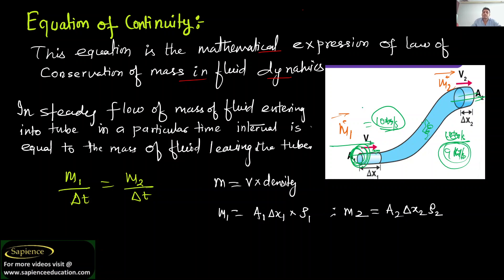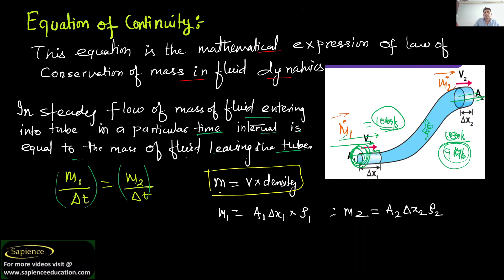As per this equation, whatever mass flow rate is going in at the inlet is equal to mass flow rate at the outlet. In a steady flow, the mass of fluid entering the tube in a particular time interval is equal to the mass of fluid leaving the tube. Mass is equal to volume into density, or mass per unit volume is equal to density.